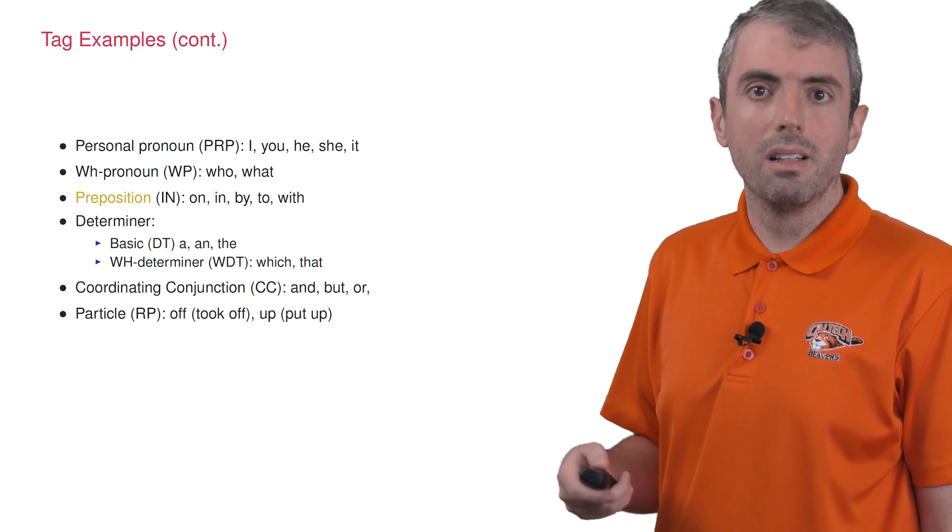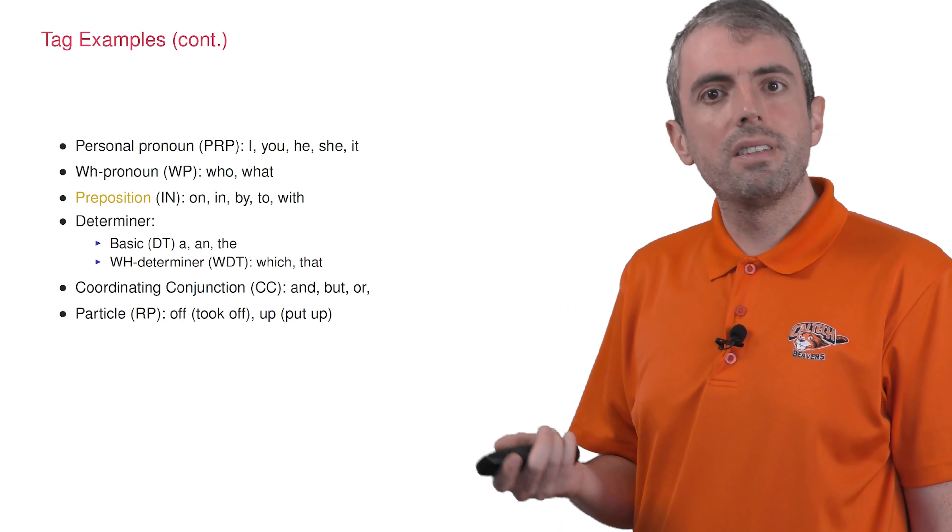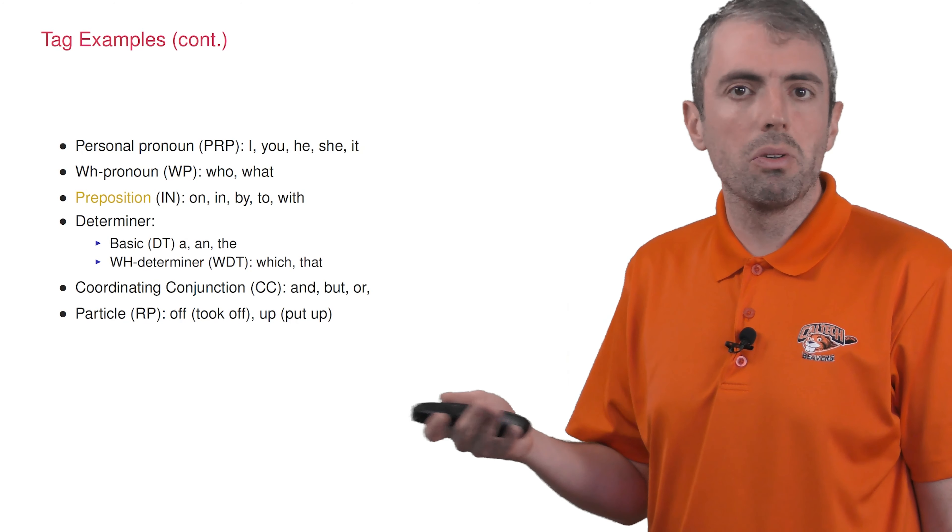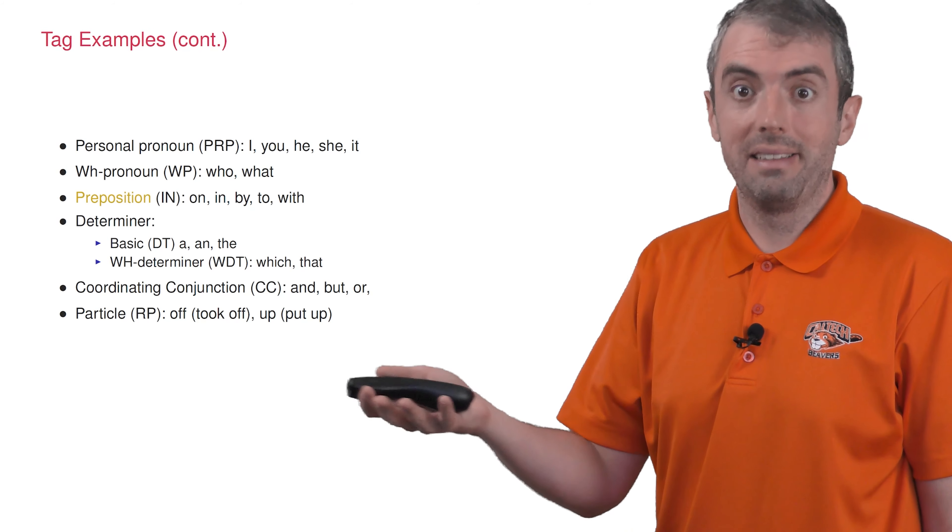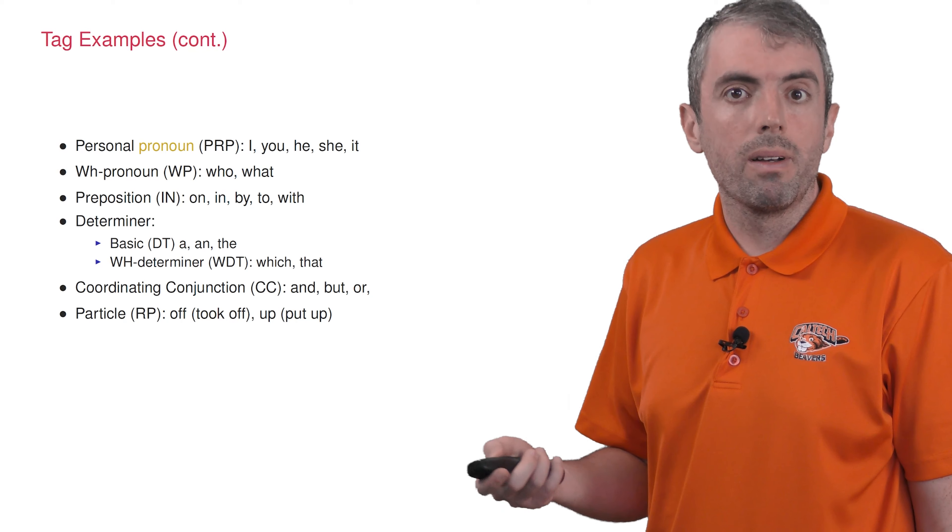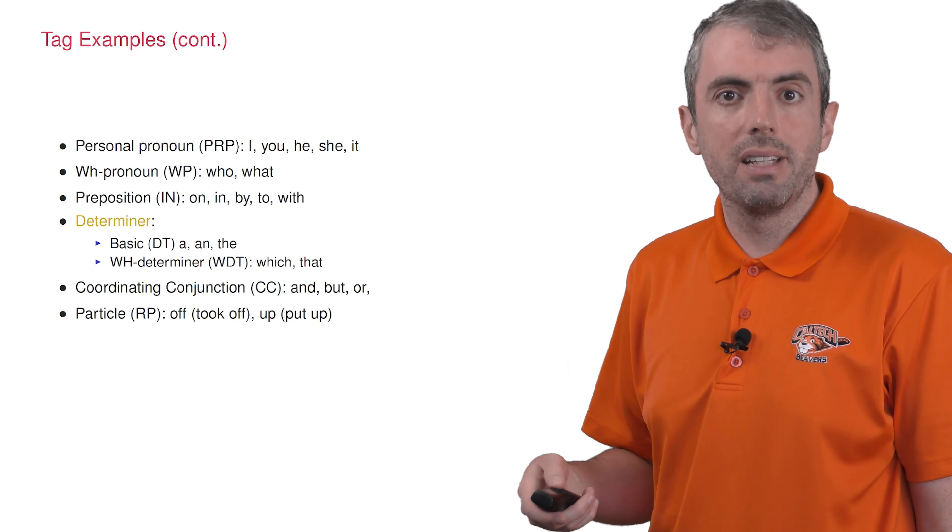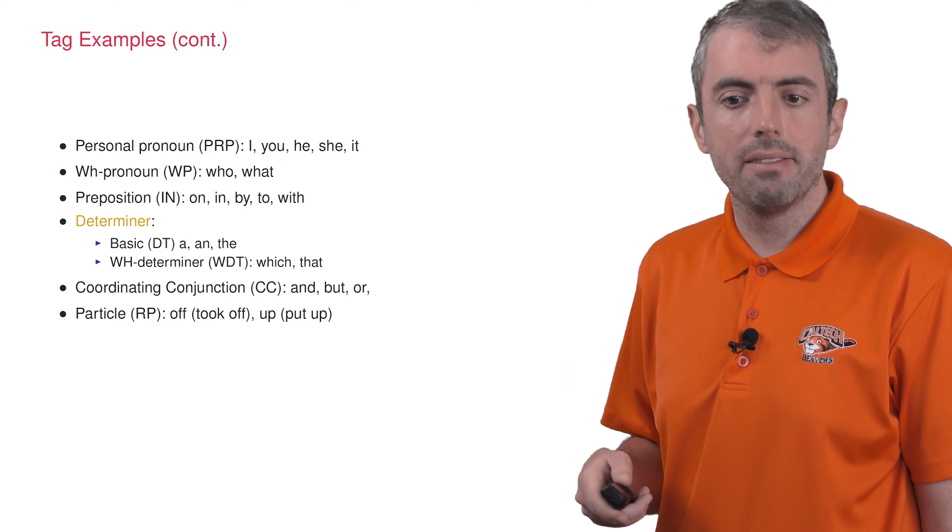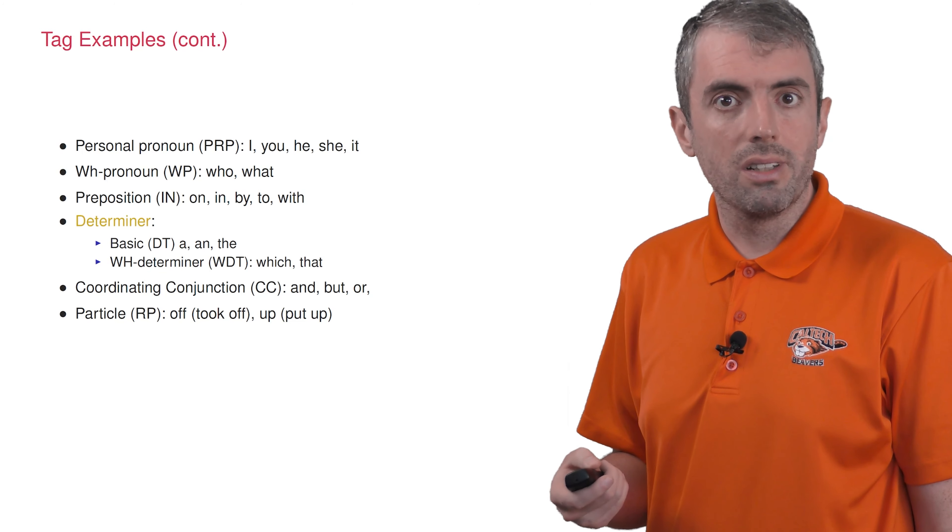Continuing on to closed parts of speech: prepositions say where or how a noun or verb does something or exists. Pronouns stand in for nouns. And determiners tell you which or how much of a noun you have, or they're used to introduce questions.